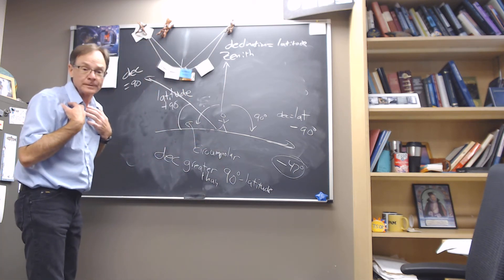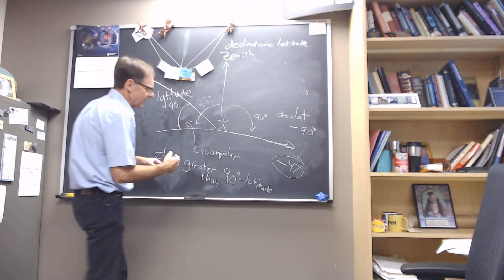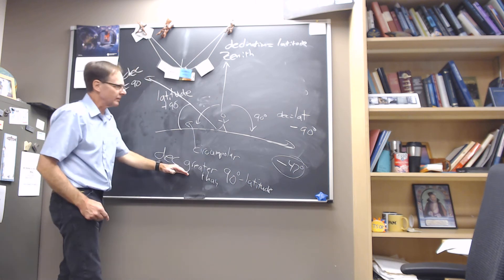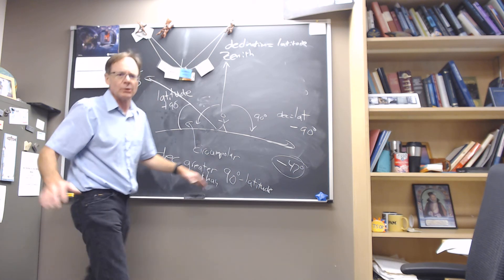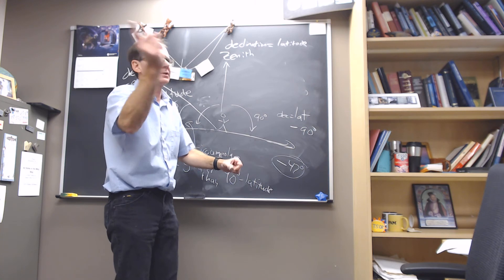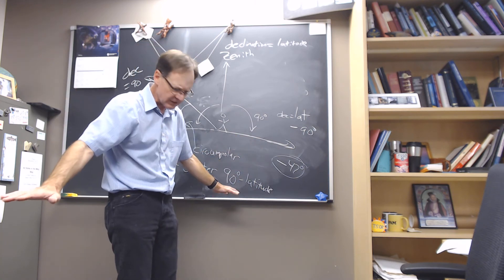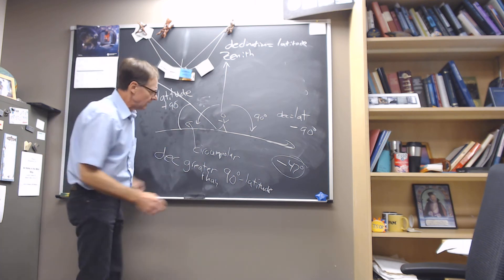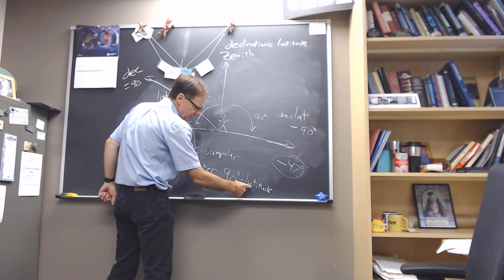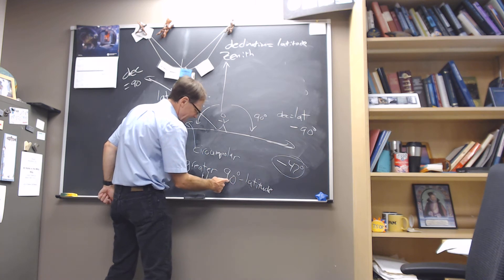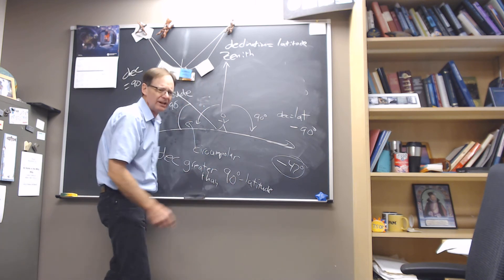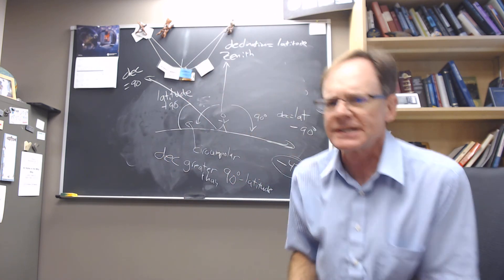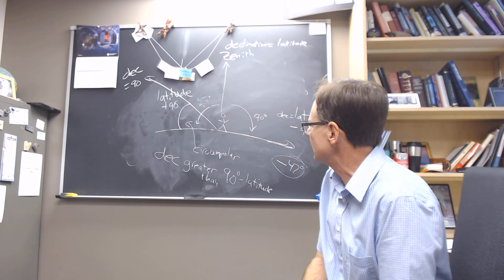Now, if we're at the North Pole, the latitude is 90 and 90 minus 90 is 0. And so everything that has a declination above 0 would be circumpolar. So in fact, you'd see the northern half of the sky all the time circling around. South Pole, you'd see the southern half of the sky all the time circling around. And if we're at the equator, latitude is equal to 0. 90 minus 0 is 90. You would need a declination greater than 90 degrees for something to be circumpolar all the time. No such thing exists. So you would have no circumpolar stars at the equator.